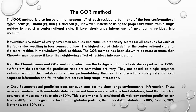In Chou-Fasman, the window size for alpha helix was six residues. In the GOR method, the window size is 17 residues, and we add the propensity scores of all residues for each of the four states. The highest-scoring state defines the conformational state for the center residue of the window. The GOR method has been shown to be more accurate than Chou-Fasman because it takes the neighboring effect of residues into consideration.